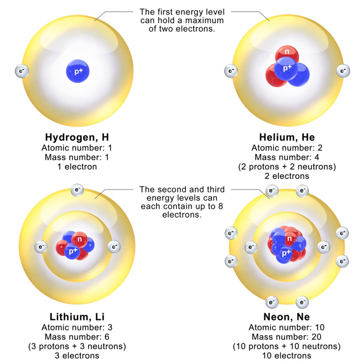The story of the discovery of the neutron and its properties is central to the extraordinary developments in atomic physics that occurred in the first half of the 20th century, leading ultimately to the atomic bomb in 1945. In the 1911 Rutherford model, the atom consisted of a small positively charged massive nucleus surrounded by a much larger cloud of negatively charged electrons. In 1920, Rutherford suggested that the nucleus consisted of positive protons and neutrally charged particles, suggested to be a proton and an electron bound in some way. Electrons were assumed to reside within the nucleus because it was known that beta radiation consisted of electrons emitted from the nucleus. Rutherford called these uncharged particles neutrons.